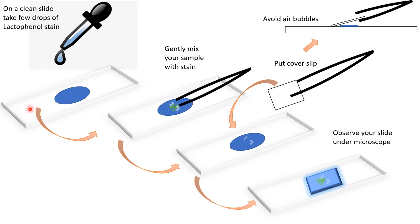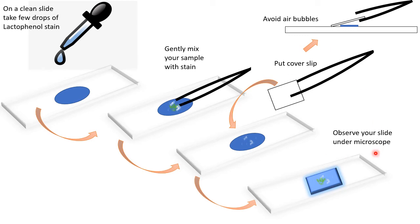The actual procedure: first take a clean glass slide and add a few drops of lacto phenol stain. Then gently mix your fungal sample — picked up using forceps — into the stain on the slide. Place a cover slip on top, avoiding air bubbles by placing one edge of the cover slip down first and then slowly lowering it onto the sample. Your slide is now ready for microscopic observation.